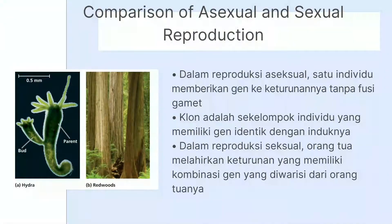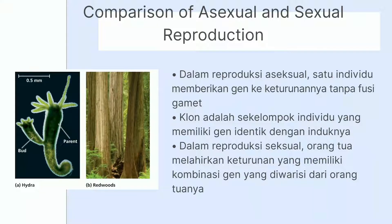Terdapat perbandingan antara reproduksi aseksual dengan reproduksi seksual. Beberapa organisme tidak melakukan reproduksi secara seksual. Reproduksi seksual terjadi saat proses fertilisasi sel sperma dengan sel telur. Organisme yang tidak melakukan reproduksi seksual disebut aseksual. Reproduksi secara aseksual melalui proses mitosis akan menghasilkan klon identik. Contohnya, hidra membentuk tunas melalui proses mitosis yang tumbuh menjadi individu baru dan identik. Begitu pun dengan tanaman redwood. Dalam reproduksi aseksual tidak ada variasi genetik yang terbentuk.